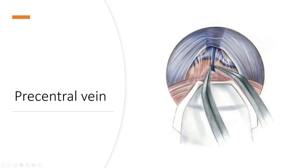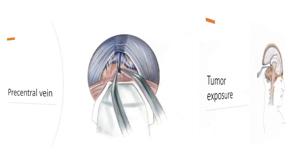There are many tributaries to the precentral vein, and this vein should be cauterized and divided in order to gain access a little bit deeper. Finally, you have tumor exposure.